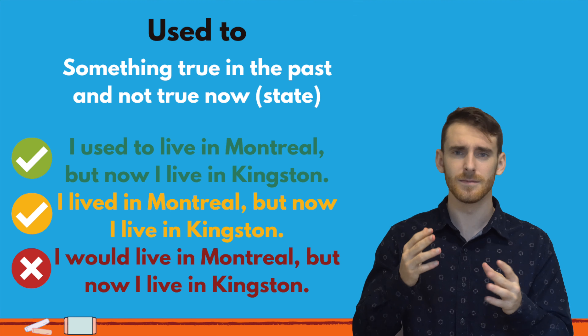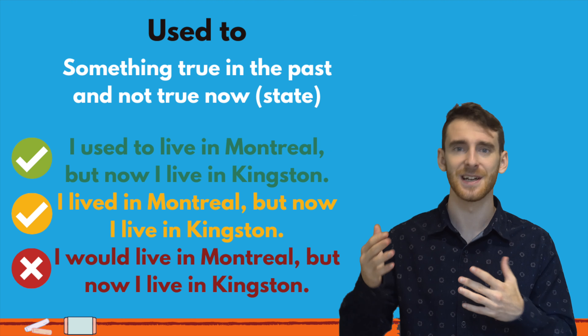But when you want to express something that's a repeated action in the past, or something that was true in the past and not true now, you're going to use 'used to' or 'would.' And that's what we'll talk about right now in this video.